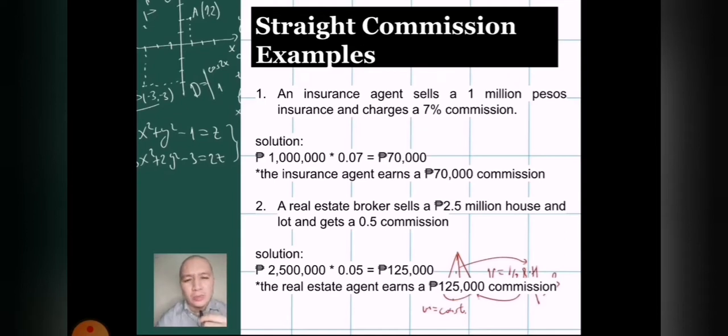Let's have these following examples. Let's say the insurance agent sells 1 million worth of insurance protection plan and the commission is 7%. This may vary, this is just an example. What we will just do is very simple - we just have to multiply it. So 1 million multiplied by 7% equals ₱70,000. The insurance agent earns ₱70,000 as a commission. Another example would be a real estate broker, those who sell house and lot, condo units, commercial spaces, etc. Let's say that agent sold a ₱2.5 million house and gets a 5% commission. Again, you would just have to multiply it: ₱2.5 million times 5% and you would get the commission which is ₱125,000.